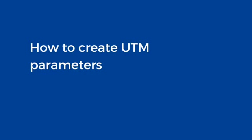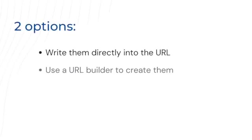To create UTM parameters, you can do one of two things. If you are confident in your ability, you can write them directly into the URL, or you can use a tool like the URL builder from Google Analytics to create them.